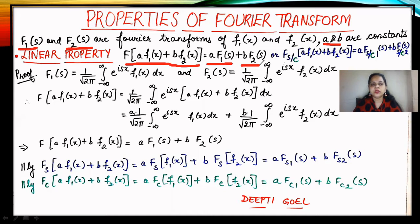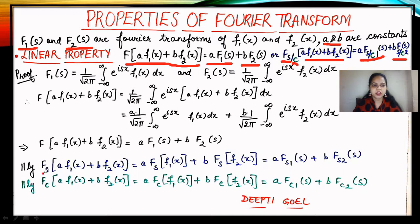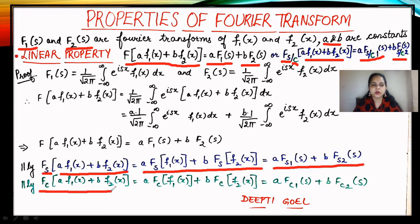This linear property is also valid for the Fourier sine transform and Fourier cosine transform. If we apply the Fourier sine transform on a·f₁(x) + b·f₂(x) it is a times the Fourier sine transform of f₁ plus b times the Fourier sine transform of f₂. Or for the Fourier cosine transform, it is a times the Fourier cosine transform on the first function plus b times the Fourier cosine transform on the second function.